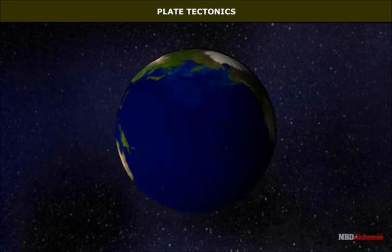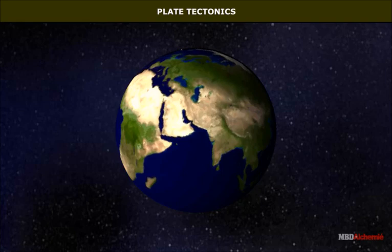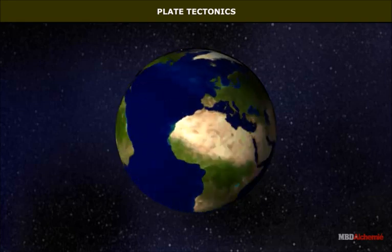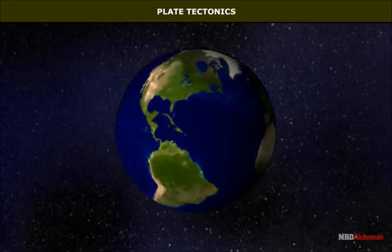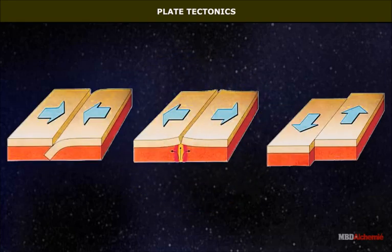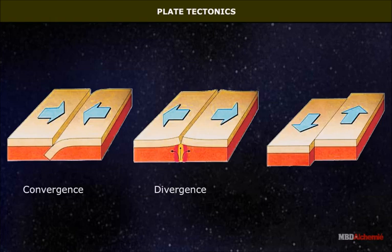Plate tectonics: the lithosphere is broken into six large and several small blocks called plates. These plates move very slowly, just a few millimeters each year, in different directions. The movement of these plates has been broadly classified into three categories: convergence, divergence, and conservative movement.